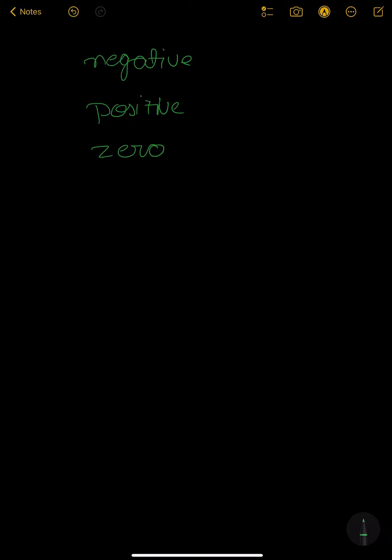You have to divide the array into three parts: first is negative, second is positive, and third is zero. You will simply make three arrays — a negative array, a positive array, and a zero array — and push negative elements into the negative array, positive elements into the positive array, and zero elements into the zero array.